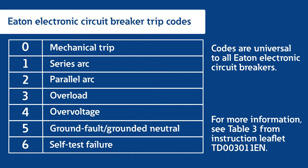But what does each trip code mean? They're actually quite easy to understand. Each number in the trip code column corresponds to the number of blinks displayed on the breaker's LED. For example, if the LED displays a pattern of two blinks, this indicates that the breaker detected a parallel high current arc, perhaps caused by a nail or screw piercing an electrical cord.